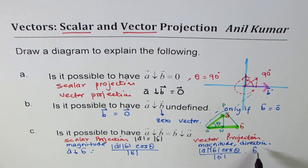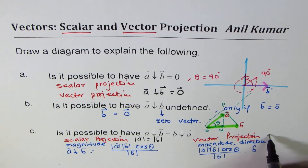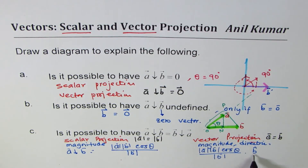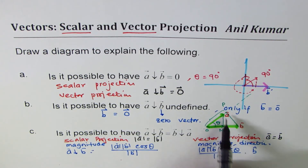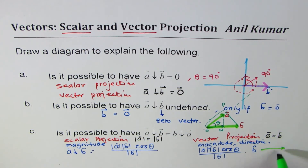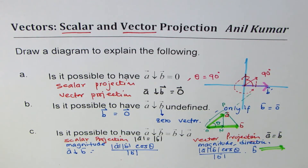However, for vector projection, vector a should equal vector b, since we are also considering direction. The direction along a and the direction along b should be the same — meaning both vectors must be in the same direction. Only then will their projections onto one another be equal. I hope that helps you understand the concept of projection of vectors. Thank you and all the best.